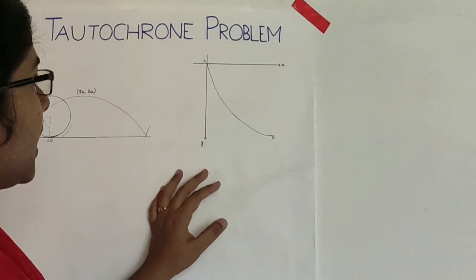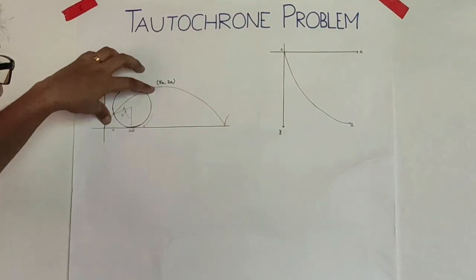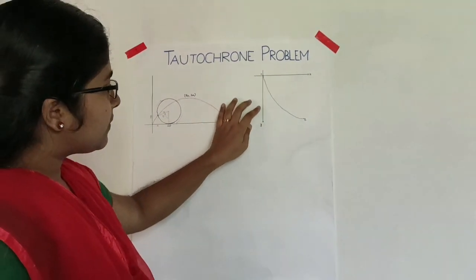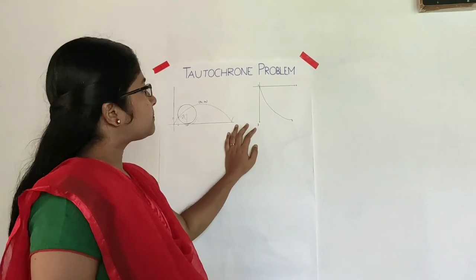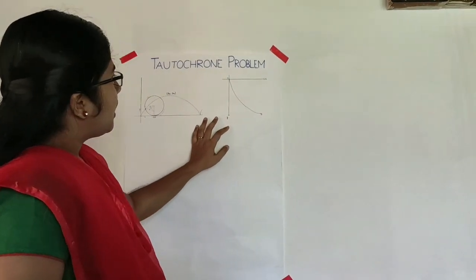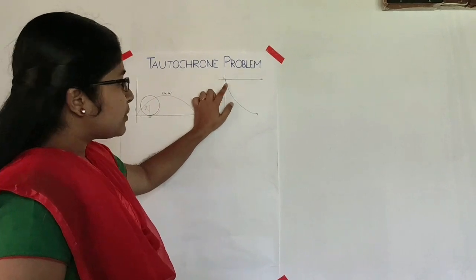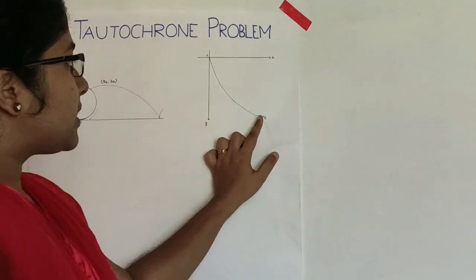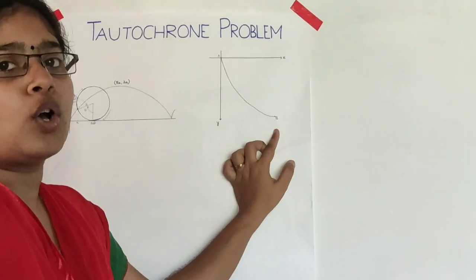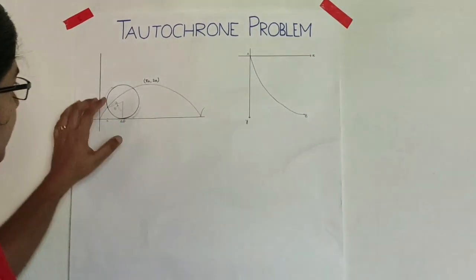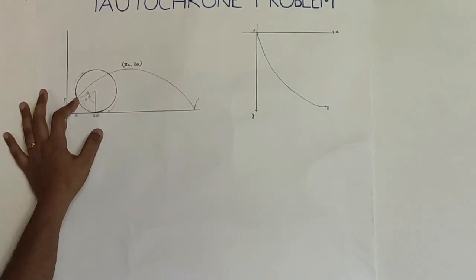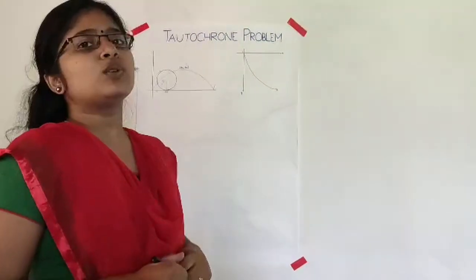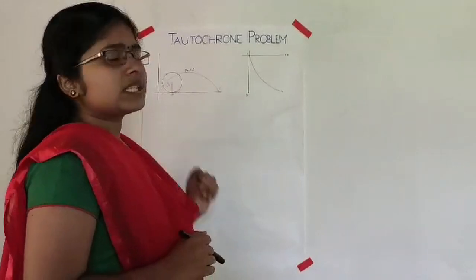For this we will consider the half path of the cycloid in the inverted form — that is we will consider the positive y-axis in the downward direction. First we will show that the time taken for a bead starting from the origin to reach the point B is π times root of a by g, where a is the radius of the circle. For this we need the parametric equation of the cycloid.